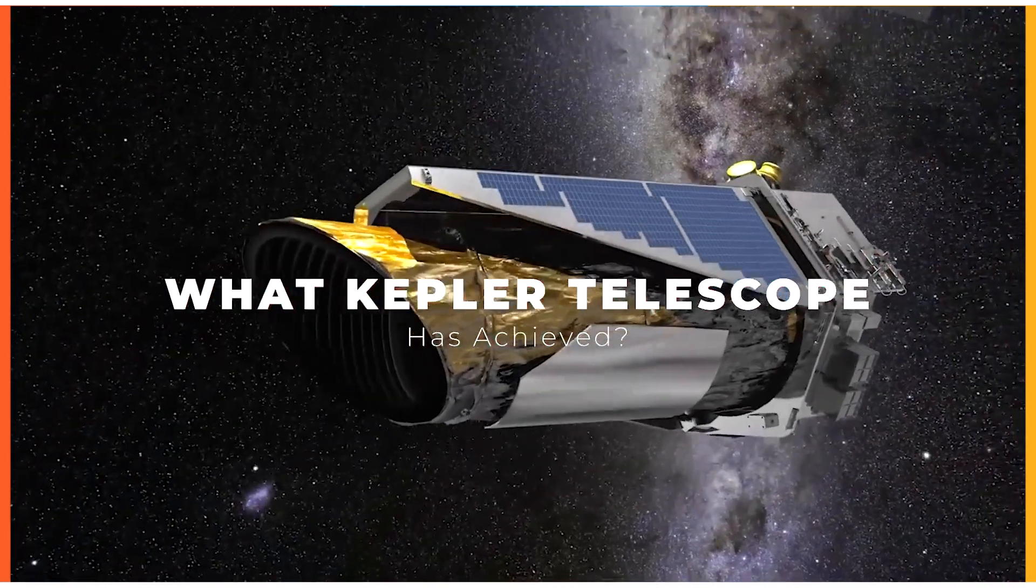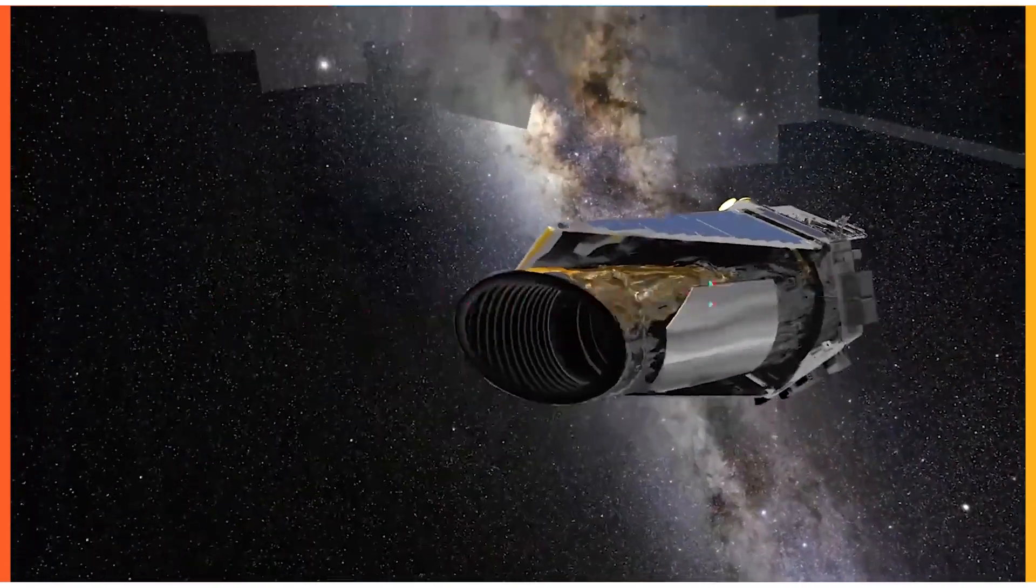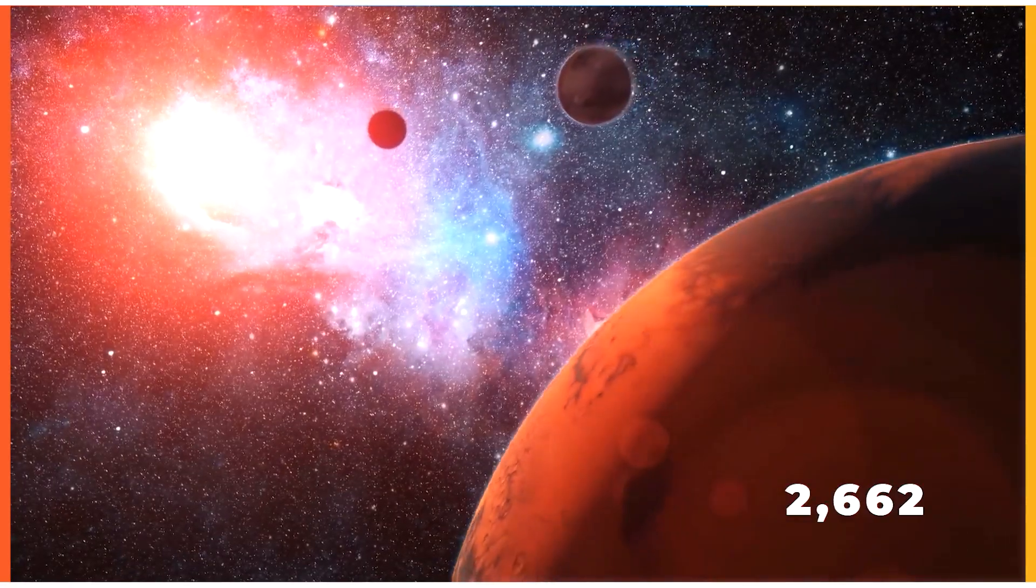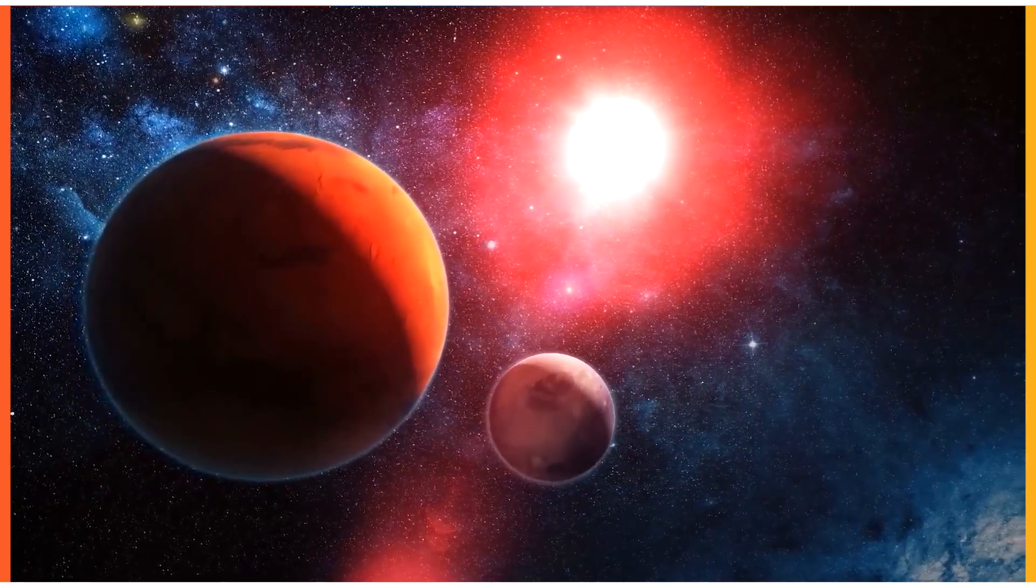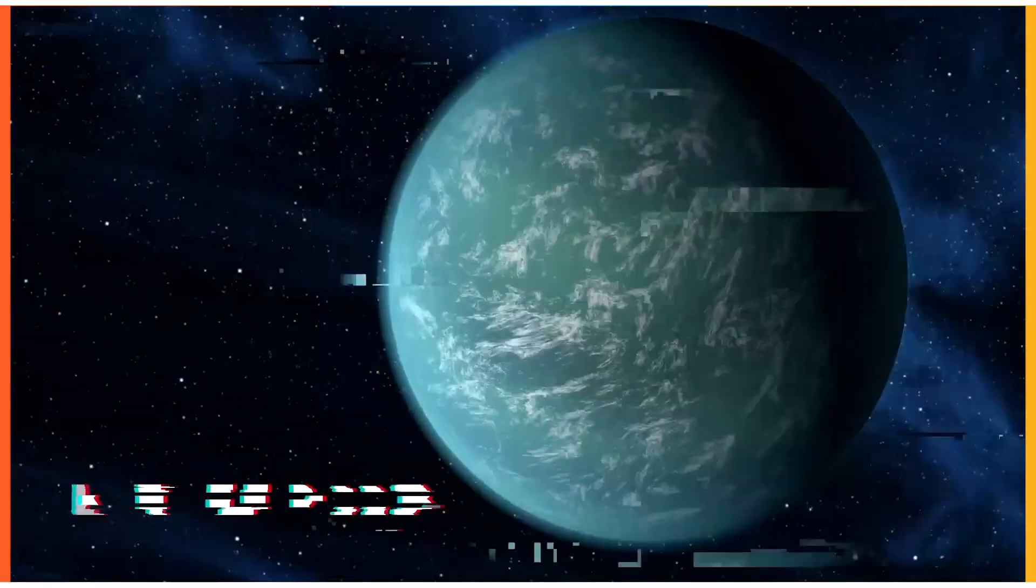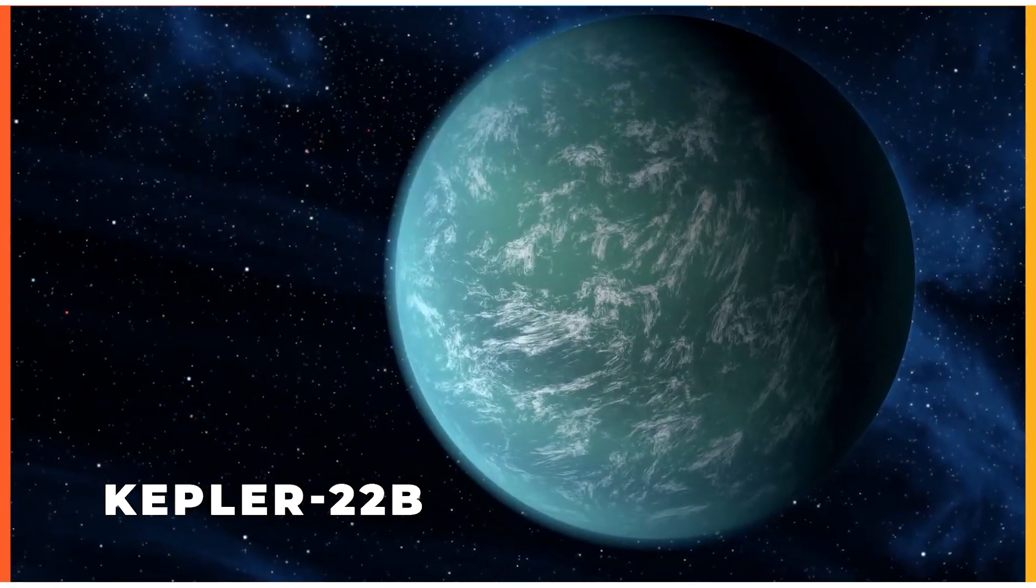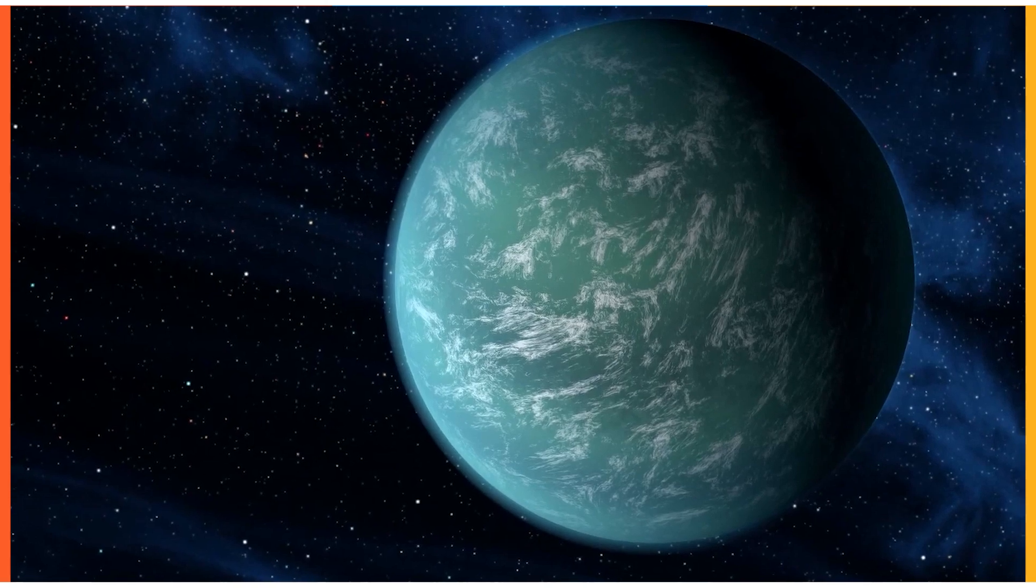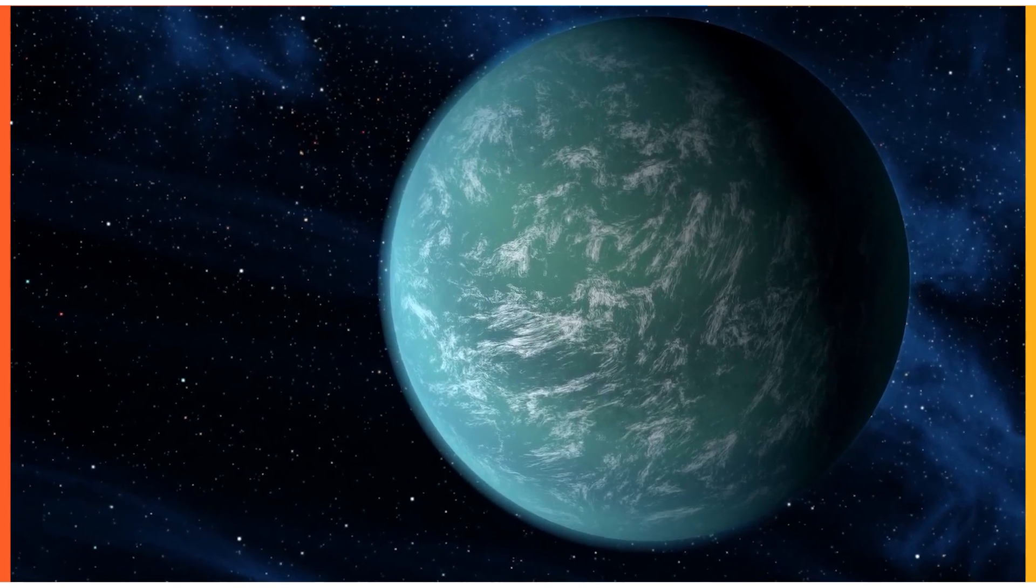What Kepler Telescope Has Achieved? Kepler identified 2,662 extrasolar planets at the end of its mission, contributing to almost two-thirds of all planets known at the time. Kepler-22b, the first planet discovered within the habitable zone of a star like the Sun with a radius 2.4 times that of Earth.